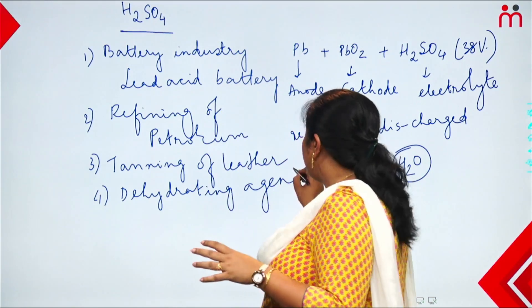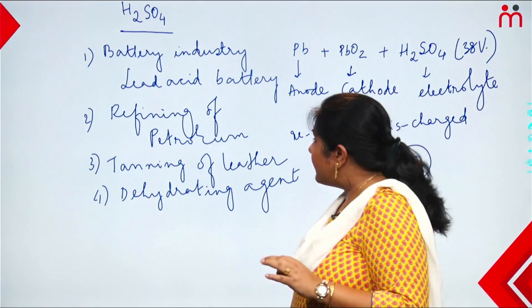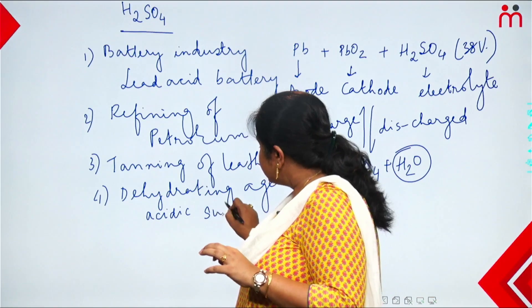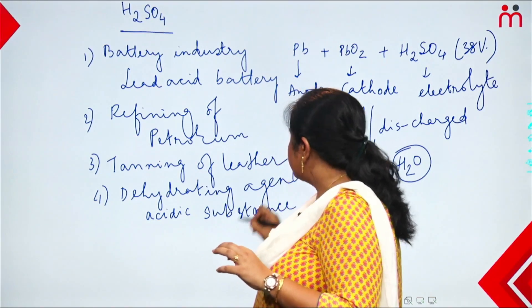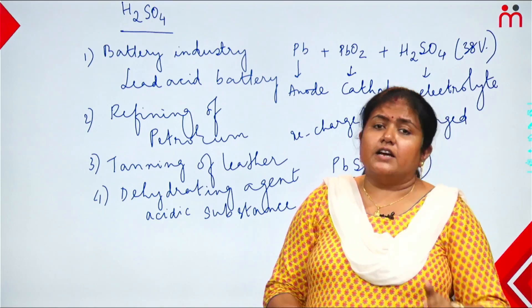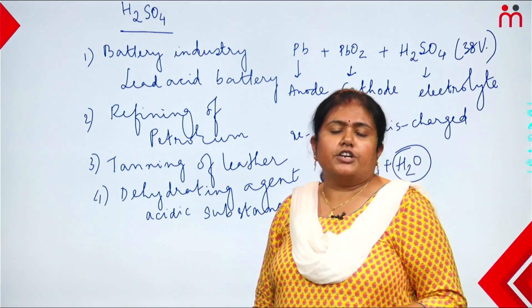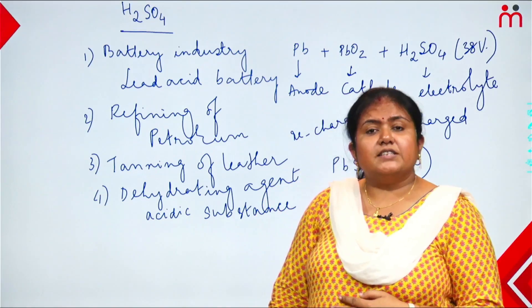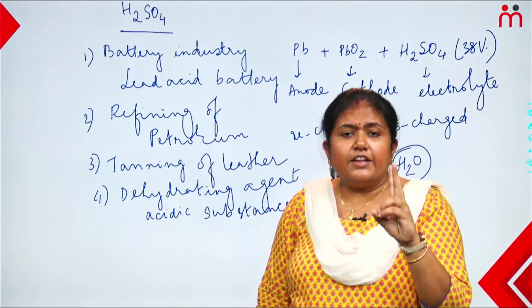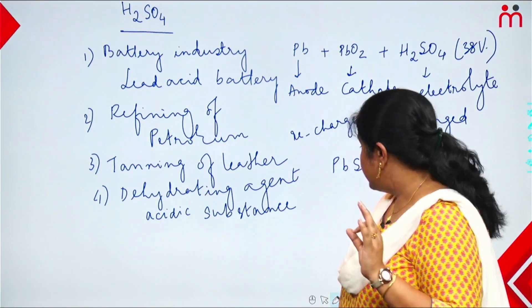Sulfuric acid is also used as a dehydrating agent. A dehydrating agent means it removes water (H₂O) from compounds. Generally, acidic substances and acidic compounds are dried using sulfuric acid as the dehydrating agent, because sulfuric acid does not react with acidic substances, making it safe to use for drying them.